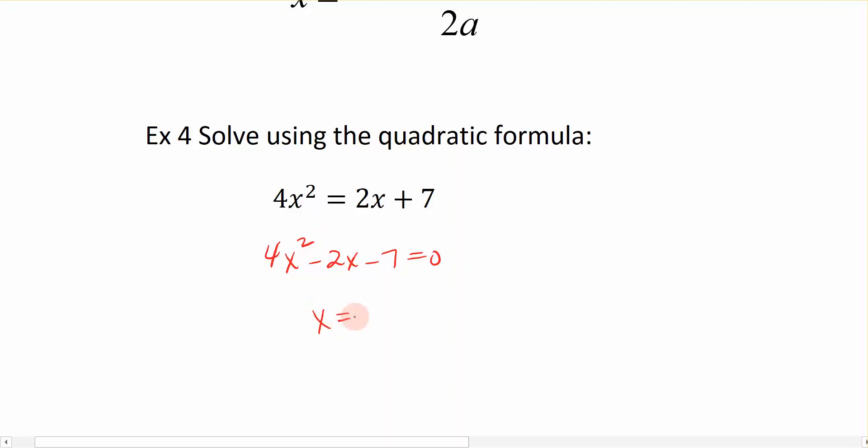So x is going to be equal to negative b. Now b is a negative 2, so you want to be careful and use parentheses when you're applying this formula. So I have negative b plus or minus the square root of b squared, which is negative 2 squared, minus 4 times a, which is 4, times c, which is negative 7. All of that is divided by 2a, which is 4.